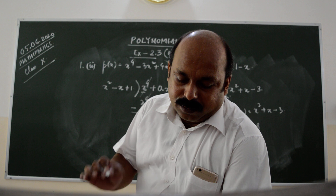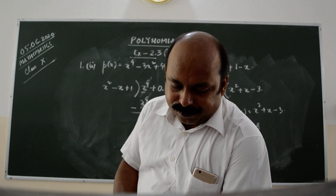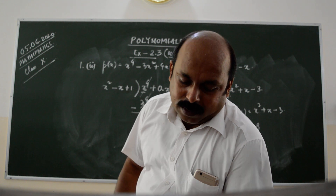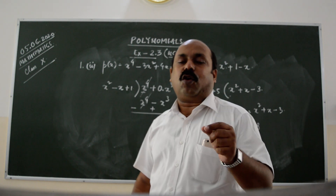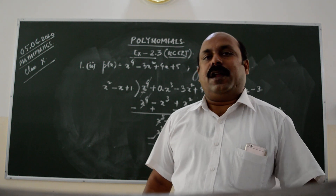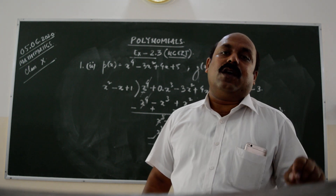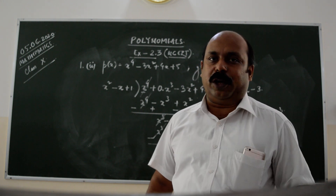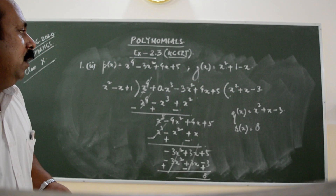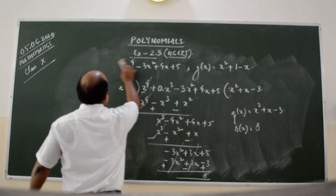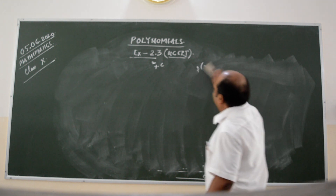Question 2: Check whether the first polynomial is a factor of the second polynomial by dividing the second polynomial by the first polynomial. The concept is: if the first polynomial divides the second polynomial exactly — meaning the remainder is equal to 0 — then the first polynomial is a factor of the second polynomial. Otherwise, if the remainder is not equal to 0, it is not a factor. This question is based on the same division, but asked in a different way.